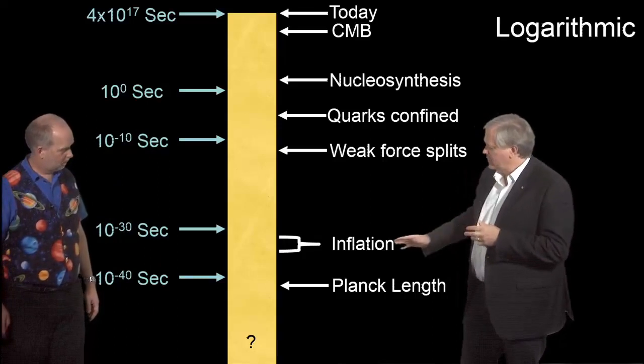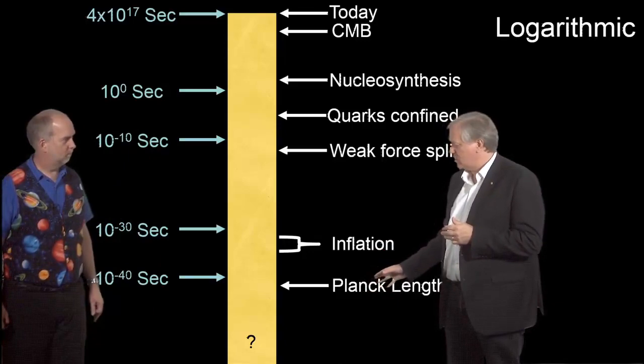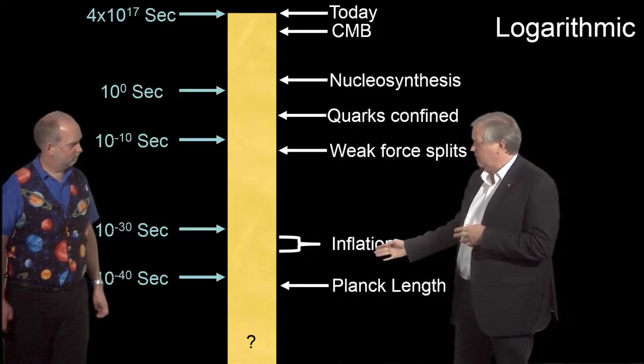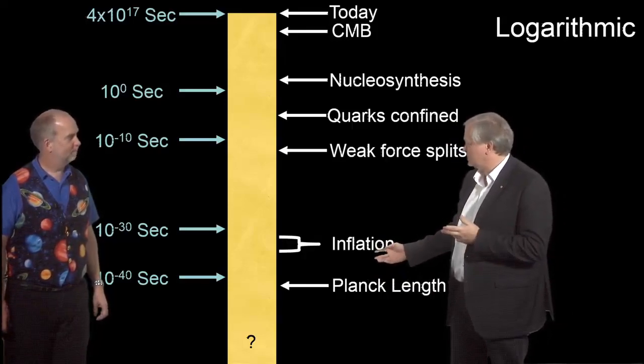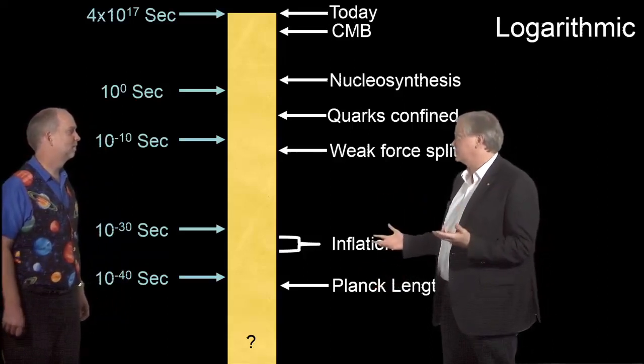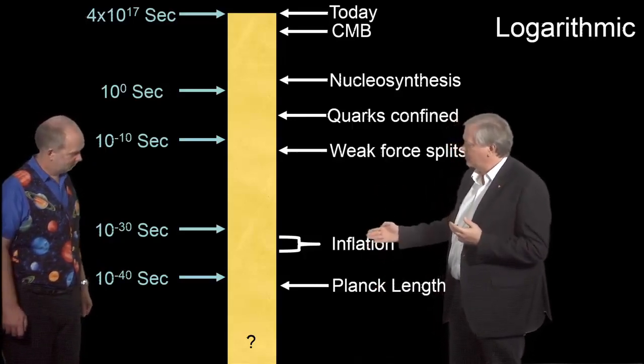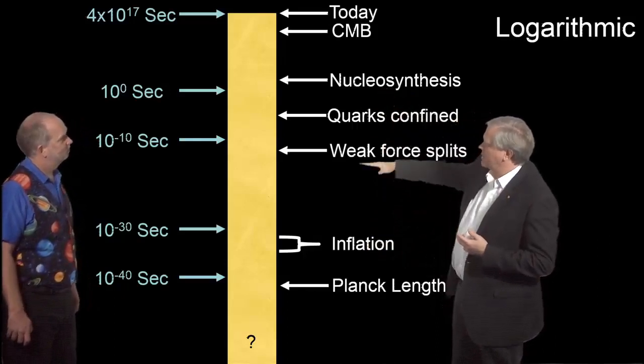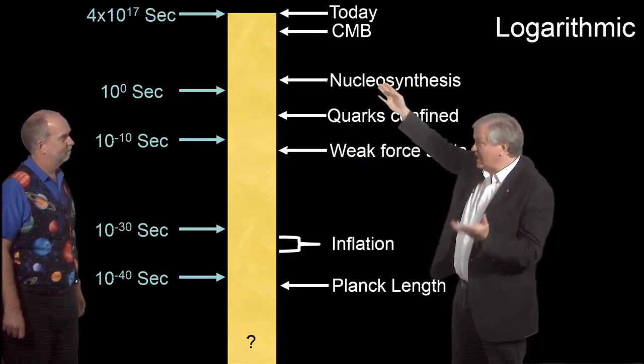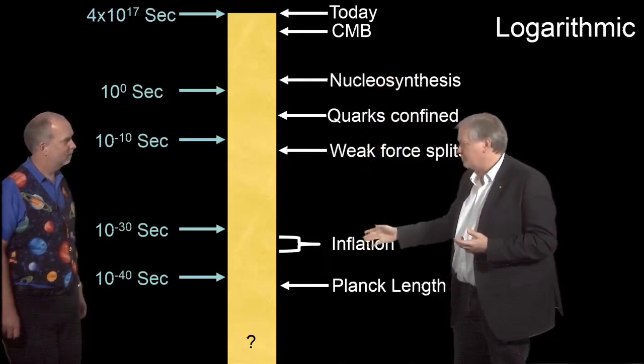I think it's important to realize that as we go back here, our knowledge of physics becomes very, very poor. There's the notion, as we'll talk about, that maybe inflation happened forever, which is an interesting question. In which case this time before this becomes kind of meaningless. Now that's a speculative idea, but it's not necessarily wrong, it's not necessarily right - we don't know. So we have a very good understanding of things thanks to the Large Hadron Collider through here. Nuclear synthesis we can actually see nature do, so we get very certain here. And as we go back here it becomes more and more uncertain.